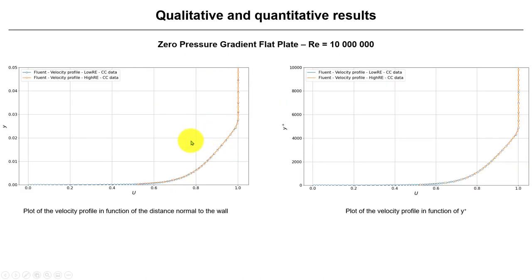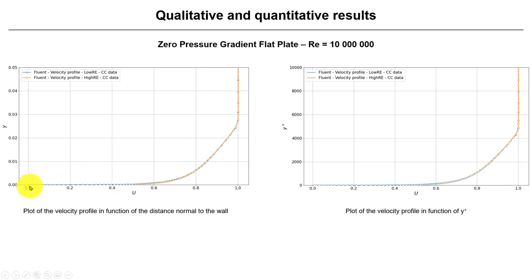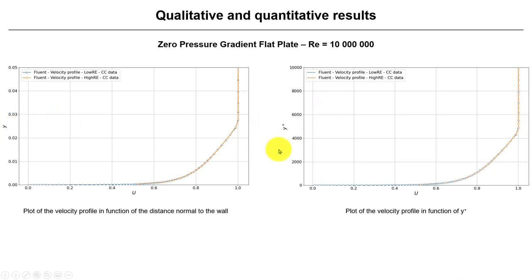Now we go to the proper validation. We're computing the velocity profile — u versus y, the distance normal from the wall to the first cell center. This is dimensional. Each circle you see represents a cell center. In the wall-modeled mesh, one cell center is modeling all the many cell centers you have in the wall-resolved mesh. Here we show the same comparison but using y+ units instead of dimensional wall distance.